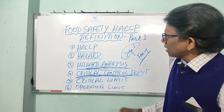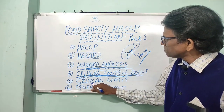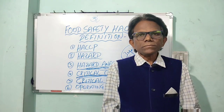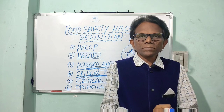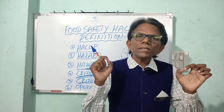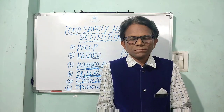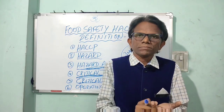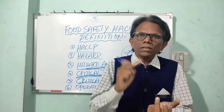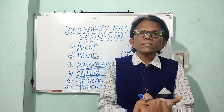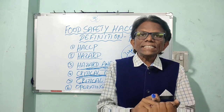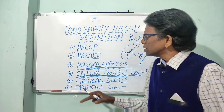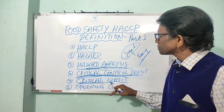The next one is critical limit. What is a critical limit? A critical limit is a maximum or minimum value at which a CCP's biological, chemical, or physical factors must be prevented, eliminated, or reduced to an acceptable level.